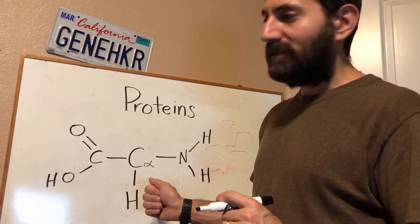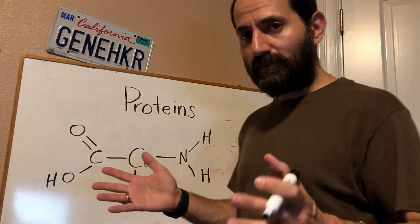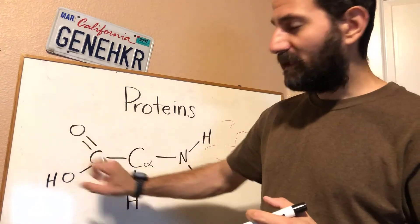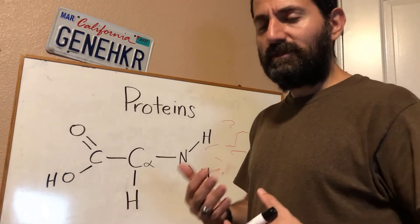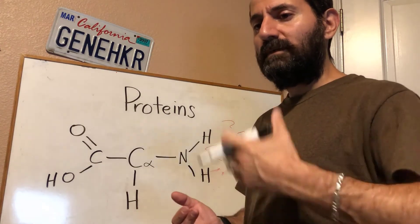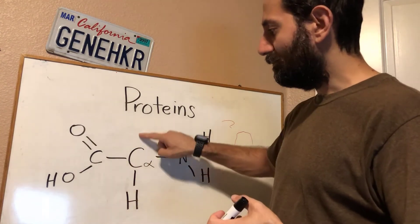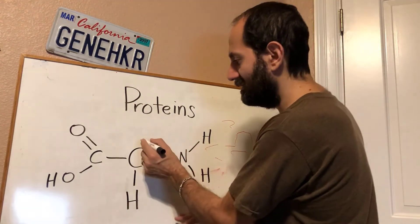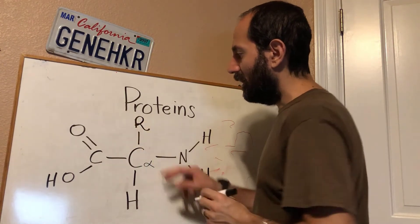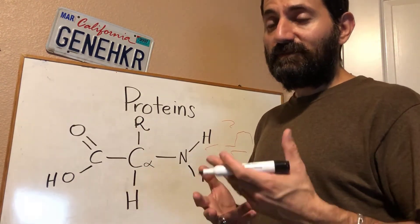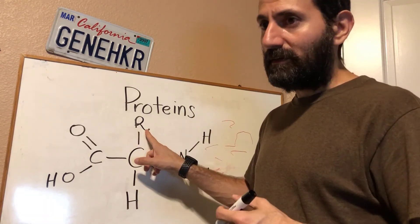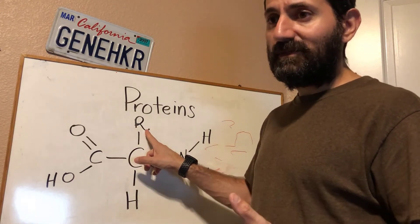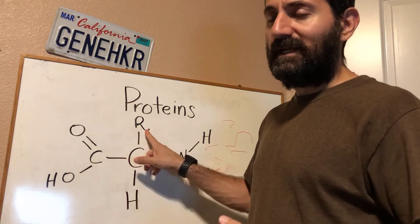It's called the backbone because all 20 amino acids that make up your proteins contain it — the carboxyl group, the amino group, an alpha carbon, and a hydrogen. What makes one amino acid different from another is whatever else is attached to that carbon, called the R group. R means variable, or the side chain, and that's what makes the 20 amino acids different.